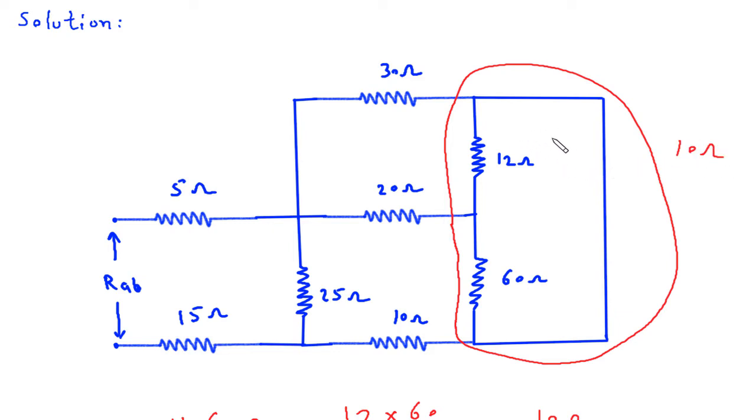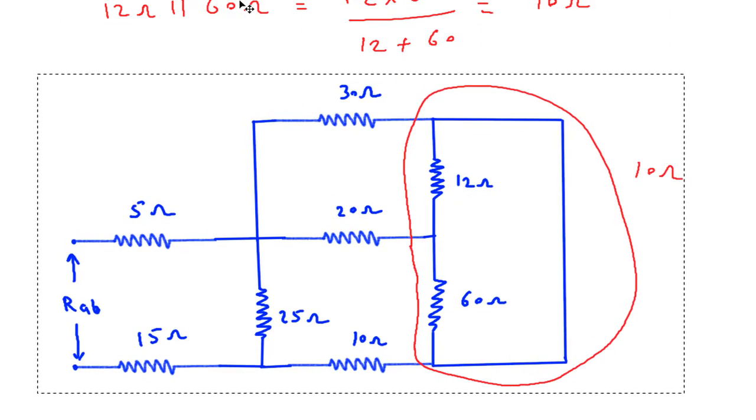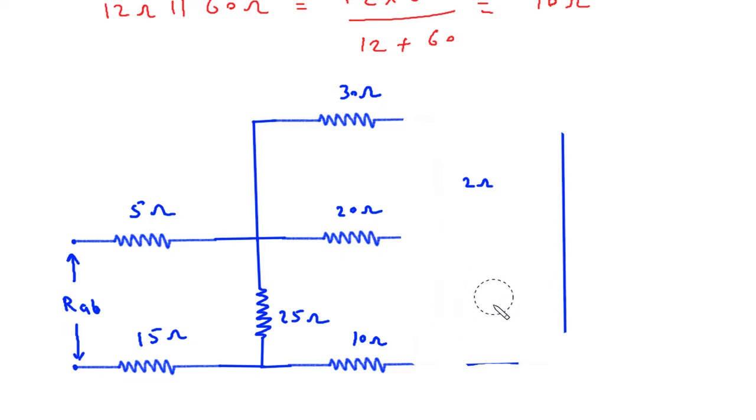Now as we can see, this 10 ohm is in series with this 20 ohm. If we redraw the circuit, it will look like this: 16 ohm, 50 ohm, this will be 10 ohm, this 11 ohm, this will be 10 ohm.